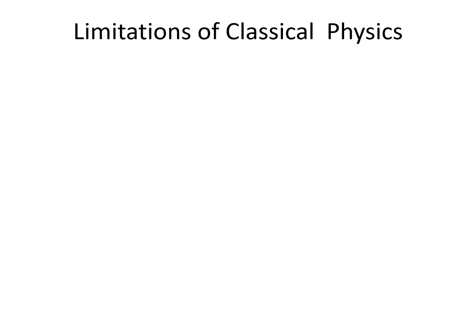What is classical physics? It is based on Newton's laws of motion. Classical physics is based on the particle nature of matter, and physical quantities like position, momentum, and energy.